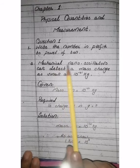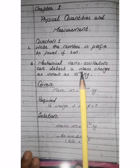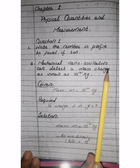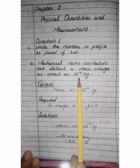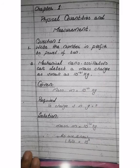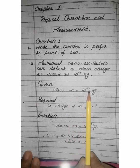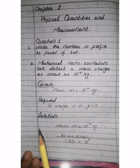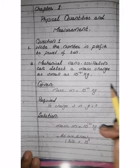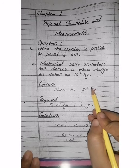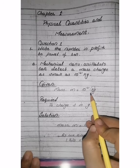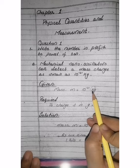Mechanical nano-oscillators basically detect mass. We have to change the numbers into prefix form with powers of 10. The given value is: mass m is equal to 10 raised to the power of minus 21 kg. The required heading is to change it into grams. Now we will change it into grams, because kg is given and kilo is a prefix.